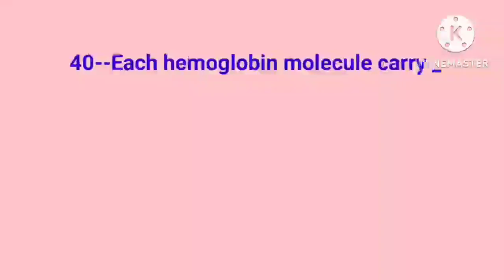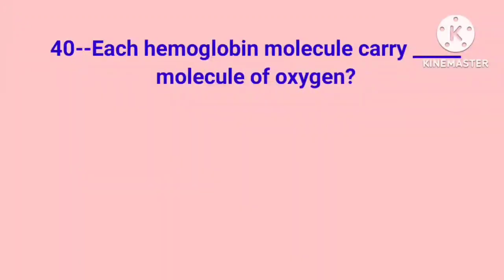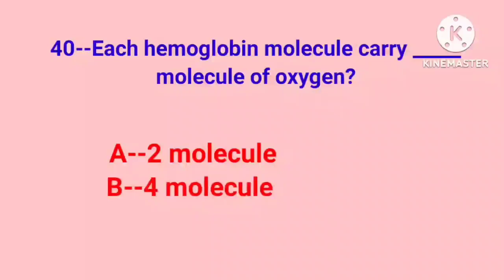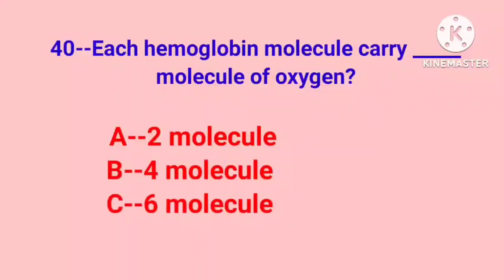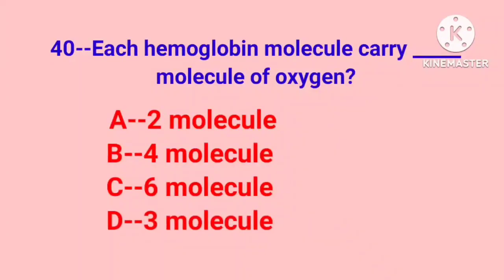Question number 40: Each hemoglobin molecule carry dash molecules of oxygen. Option A: 2 molecules, B: 4, C: 6, D: 3. Correct answer is Option B: 4 molecules.